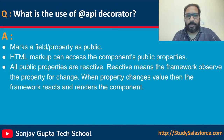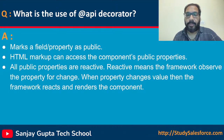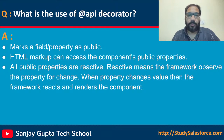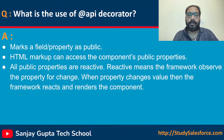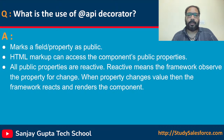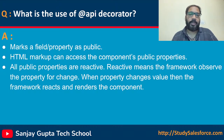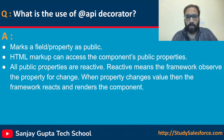What is the use of the @api decorator? @api basically makes a field or property public. HTML markup can access the component's public property. All public properties are reactive — reactive means the framework observes the property for changes. When a property changes value, the framework reacts and re-renders the component. For example, if we have a property declared as public and our component is placed on a record page, a property like recordId can receive its value automatically. This is the correct answer for the @api decorator.